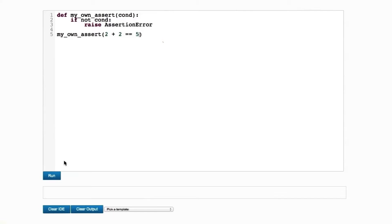Now, if I invoke myOwnAssert on 2 plus 2 equals 4, very simple test, we can run this and nothing happens because the assertion is met.